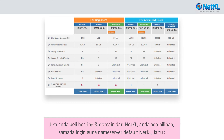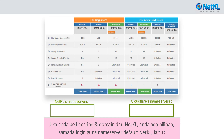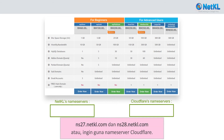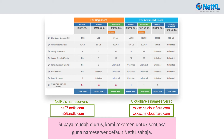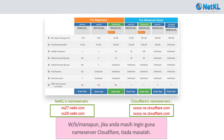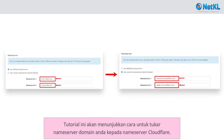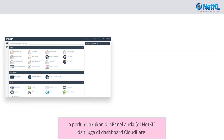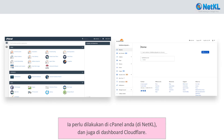If you bought hosting and a domain from Netkl, you can choose whether to use Netkl's default name servers — ns27.netkl.com and ns28.netkl.com — or to use Cloudflare's name servers. For easier management, we recommend using Netkl's default name servers, as most of Cloudflare's features are also available in Netkl's servers. However, should you still choose to use Cloudflare, this tutorial will show you how to change your domain's name server. It needs to be done in your cPanel in Netkl and also at Cloudflare's dashboard.